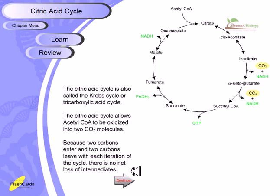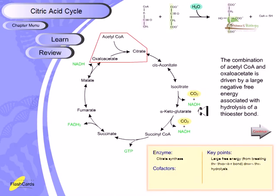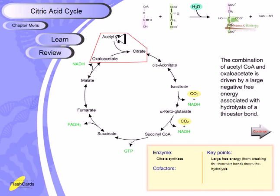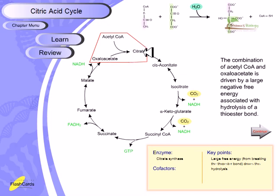In the very first step, acetyl-CoA combines with oxaloacetate. This reaction is driven by a large negative free energy associated with hydrolysis of the thioester bond. The energy produced by the breaking of this thioester bond helps carry out this reaction efficiently and produces citrate. The enzyme which incorporates acetyl-CoA and oxaloacetate to produce citrate is called citrate synthase.